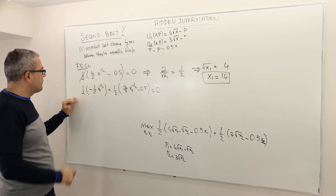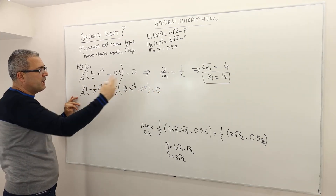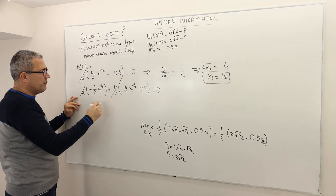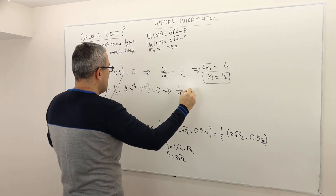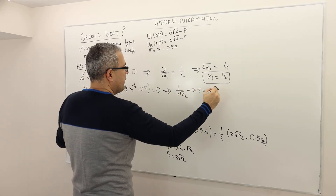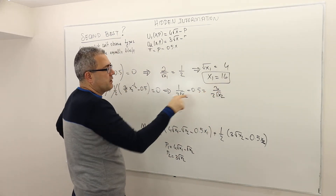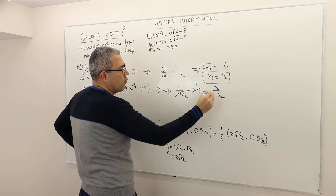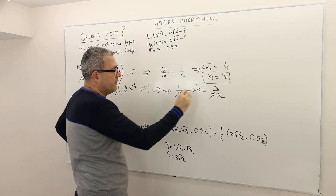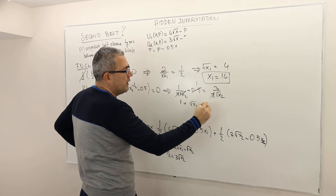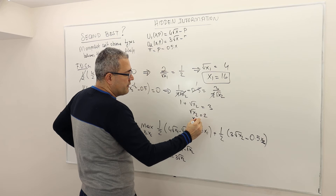For x2: multiplying both sides of the second condition by 2 and rearranging gives 1 over 2√x2 plus 0.5 equals 3 over 2√x2. Multiplying through and simplifying yields 1 plus √x2 equals 3, so √x2 equals 2, therefore x2 equals 4.